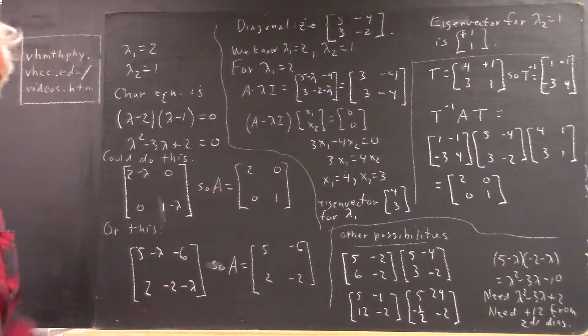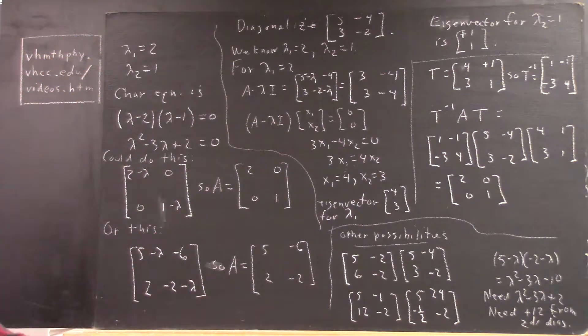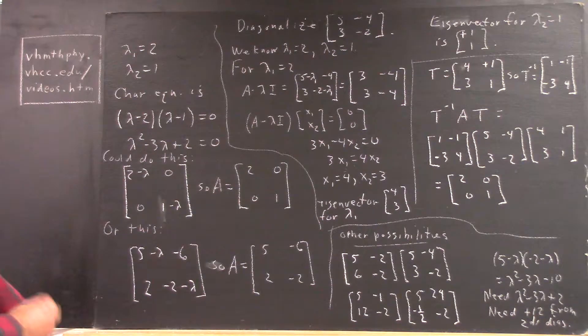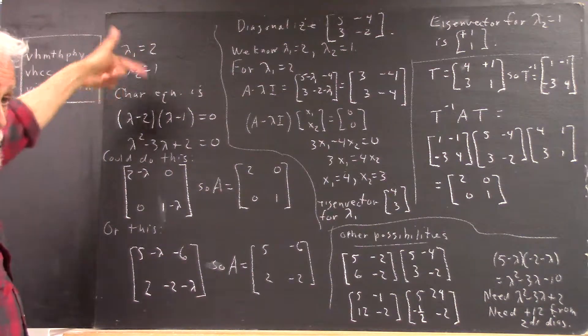We've done this before, but we're going to do it again. We choose two eigenvalues, and I let the class choose two eigenvalues. They chose 2 and 1, which is much okay. I let lambda 1 equal 2, lambda 2 equal 1.